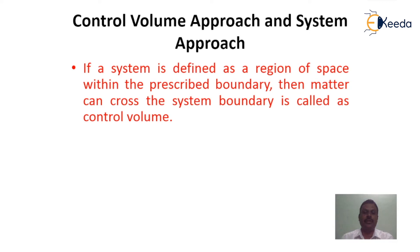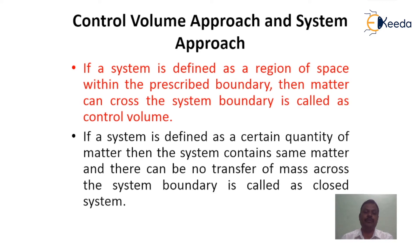If a system is defined as a region of space within a prescribed boundary, then matter can cross the system boundary — it is called as control volume. If a system is defined by a certain quantity of matter, then the system contains the same matter and there can be no transfer of mass across the system boundary — it is called as closed system.